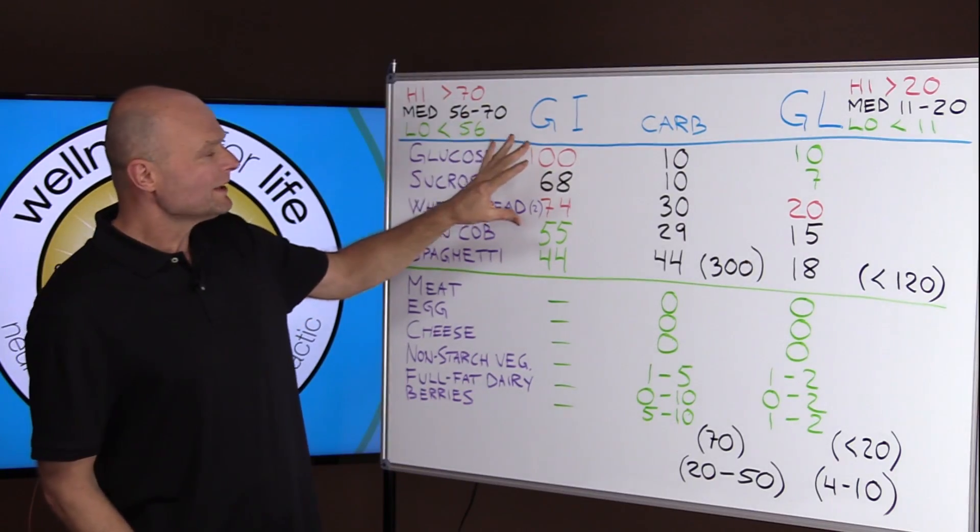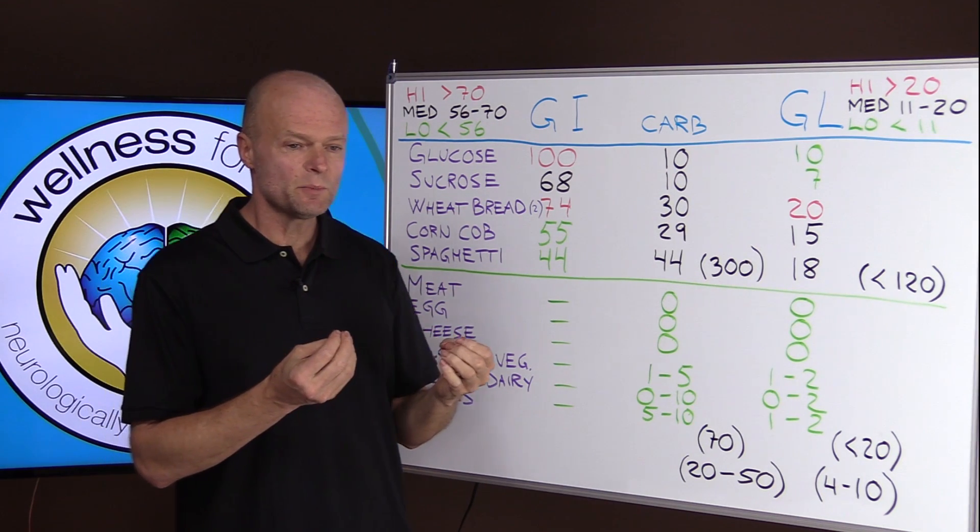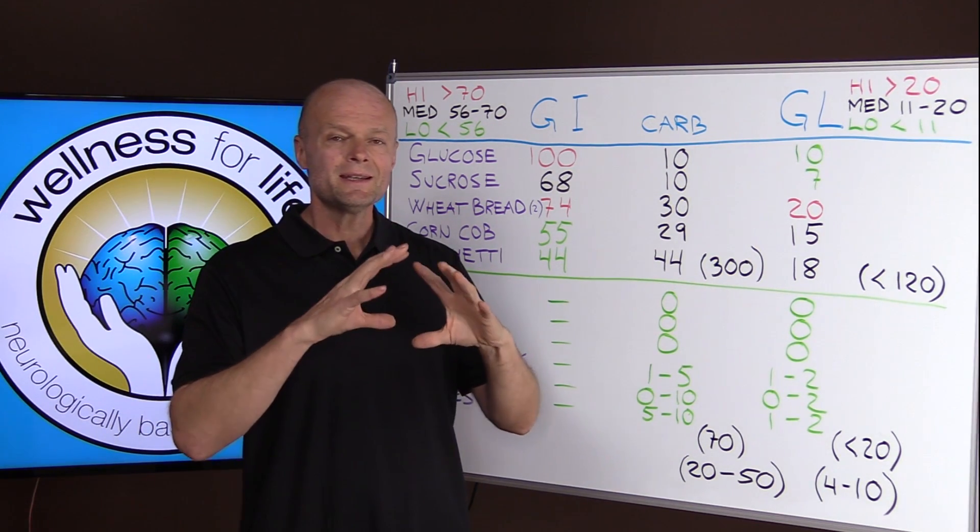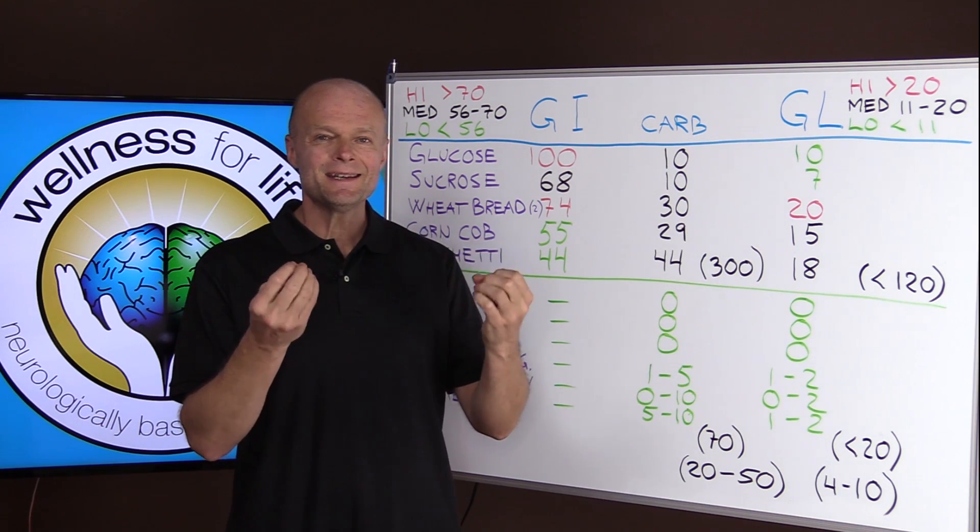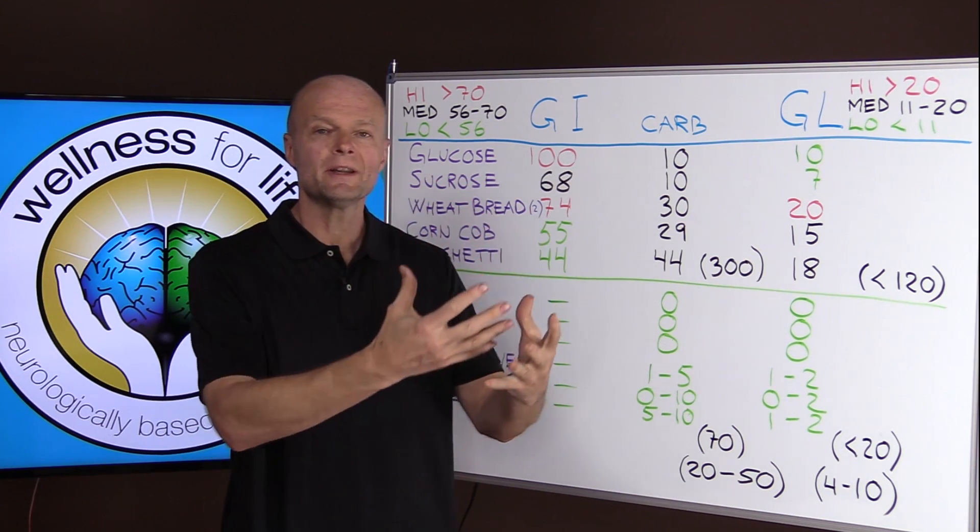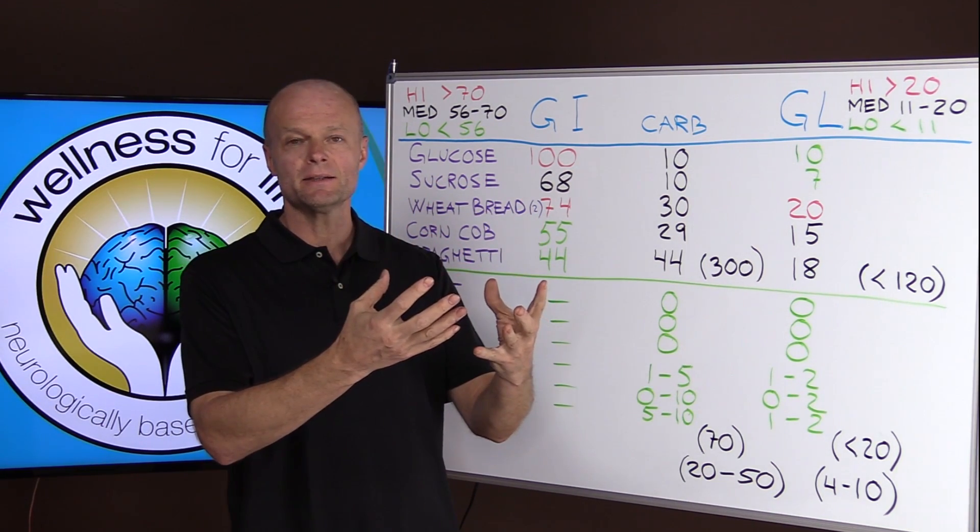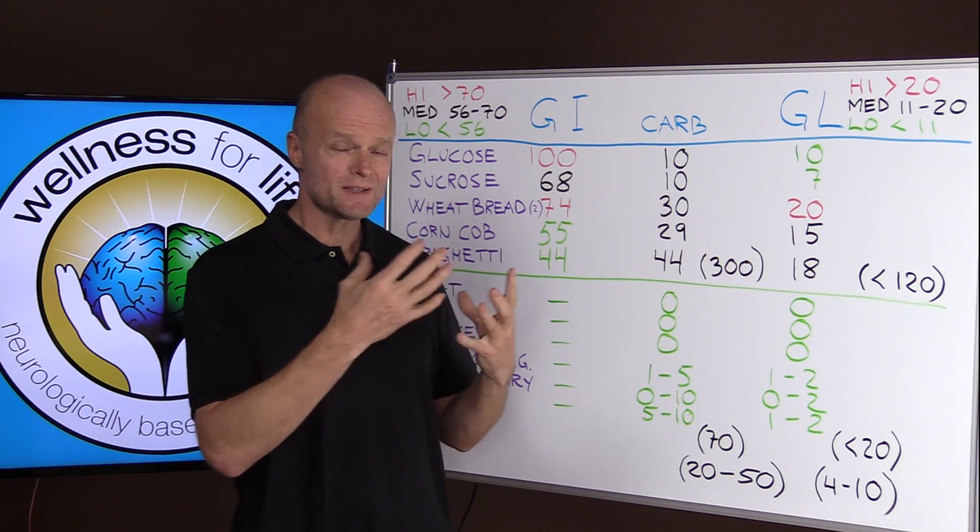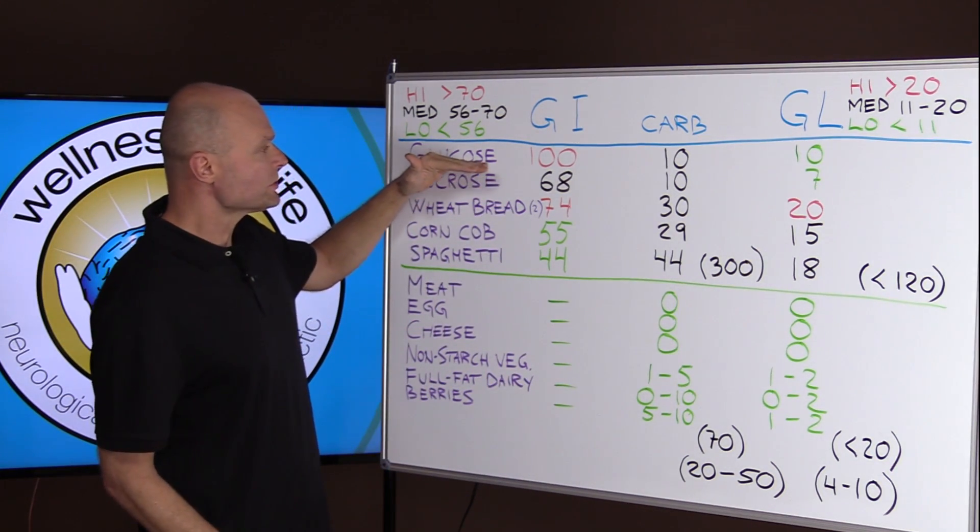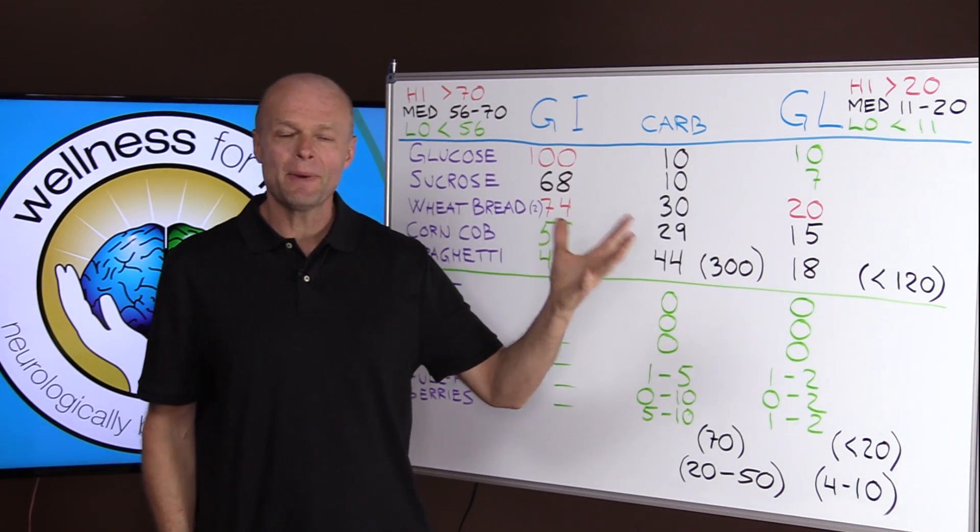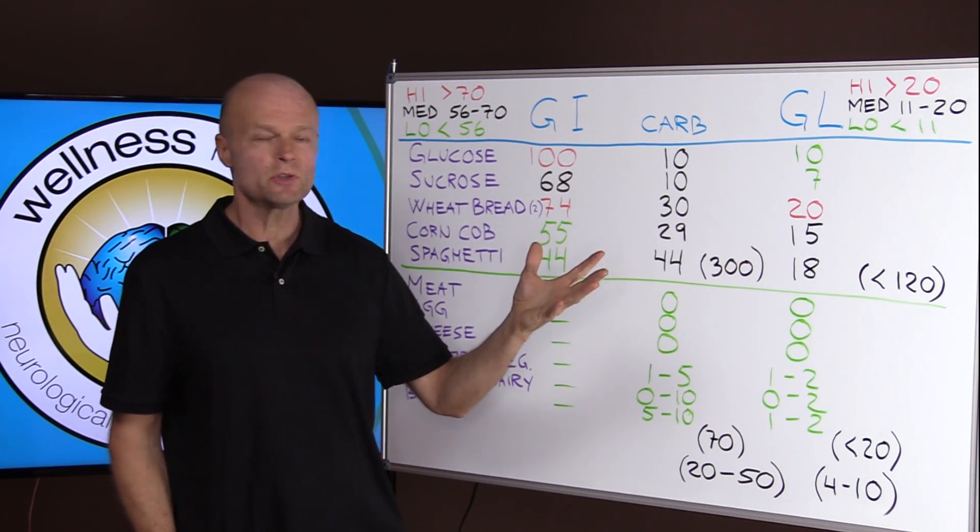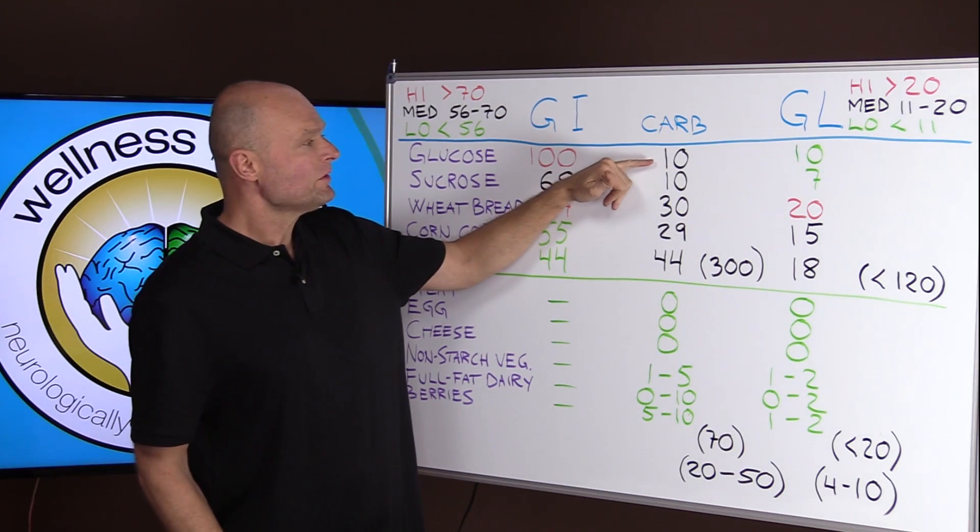They say that glycemic index isn't such a good measurement because it doesn't tell you, it doesn't give you the impact. It doesn't give you an idea of how much total impact or volume it has to raise your blood sugar. Because some things like glucose or table sugar, you're not going to eat a half a pound at a time, not most of us, I hope. You might have two teaspoons.